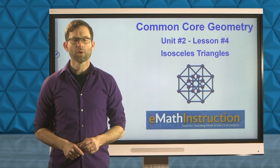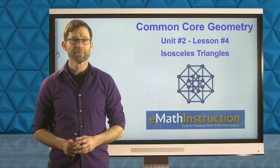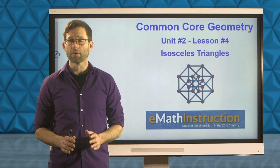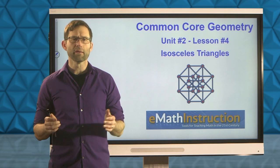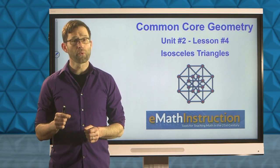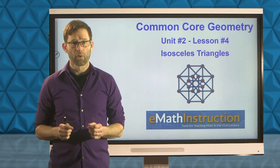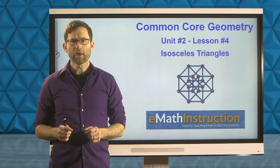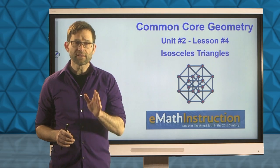Hello and welcome to another Common Core Geometry lesson by EMath Instruction. My name is Kirk Weiler and today we'll be doing Unit 2 Lesson Number 4 on Isosceles Triangles. Isosceles triangles are probably triangles that you're very well aware of, but they have amazingly important properties that we can actually prove using things we now know about rigid motions. Before we get into the properties, let's see how they're defined.